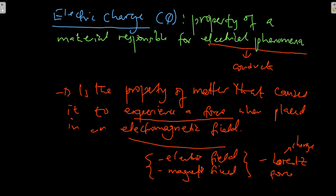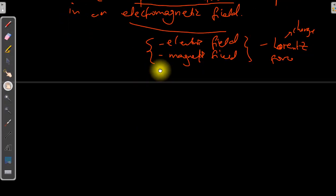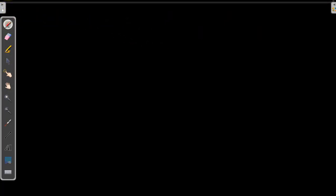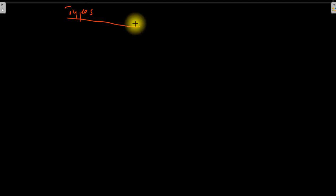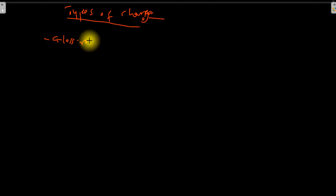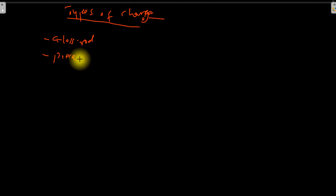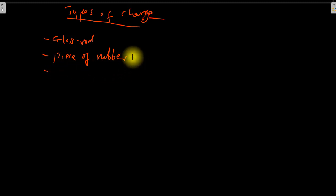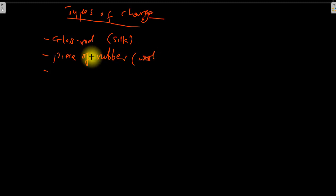Let us now look at the types of charge. To explore the types of charge, let us perform a simple experiment. In this experiment, we are going to need a glass rod, a piece of rubber, silk, and wool. We will need silk for the glass rod, and we will also need wool to rub with the rubber to make it charged.